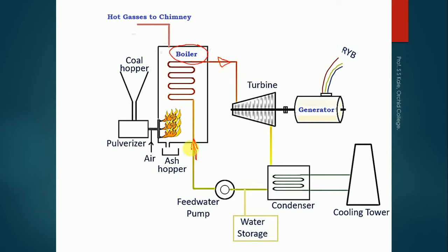Inside the tube we have water flowing through. Hot gases are generated by a combustion chamber inside the boiler, where fuel is burned. The fuel may be solid fuel, liquid fuel, or gaseous fuel. In solid fuel, coal is generally used; in liquid fuel, diesel or petrol is used; in gaseous fuel, LPG may be used. In this figure, coal is being used as fuel, and a coal hopper is used to supply the coal.